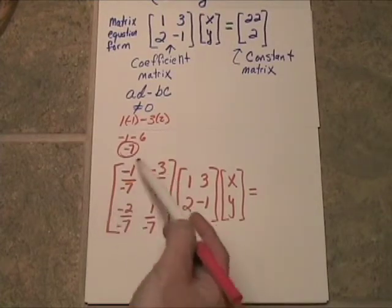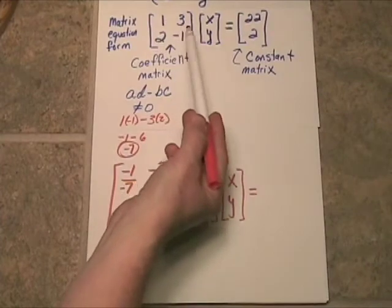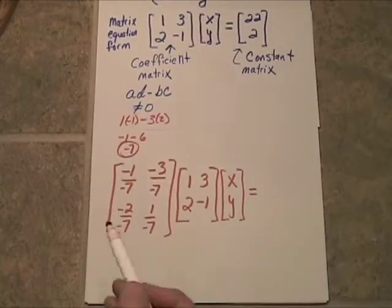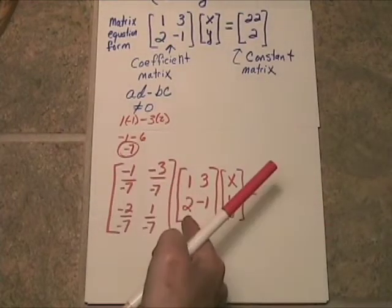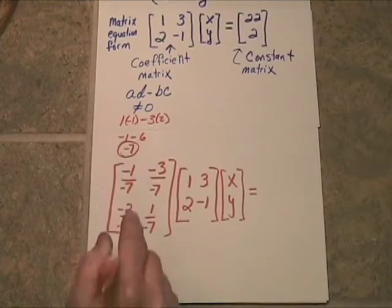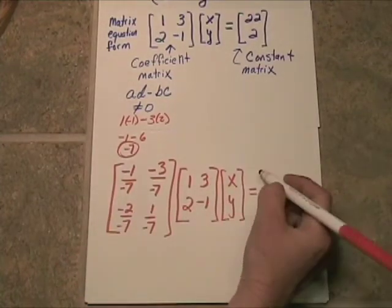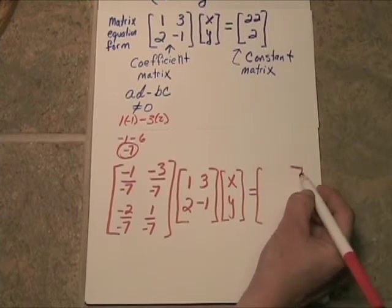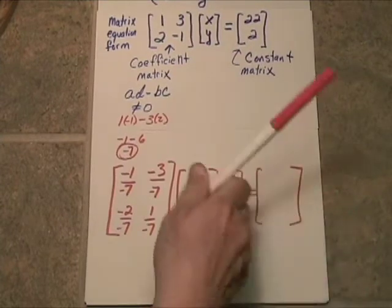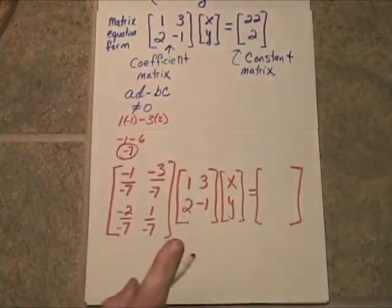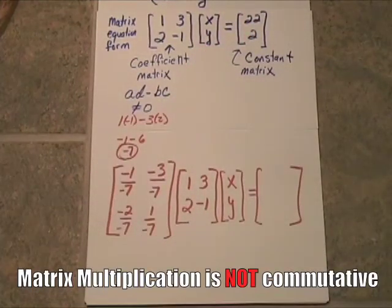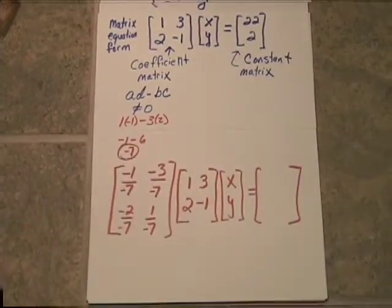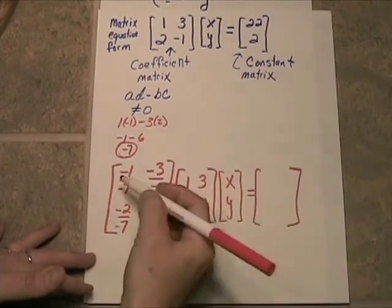Now we're going to take that inverse times the coefficient matrix and then times the point matrix. Now here's what you have to be careful of. This is the inverse of the coefficient matrix and we have placed it on the left. When we go to the right side of the equation, we have to be careful. We have to do the same thing. We have to place it on the left of the constant matrix because remember matrix multiplication is not commutative. So we have to make sure we're placing it on the left.